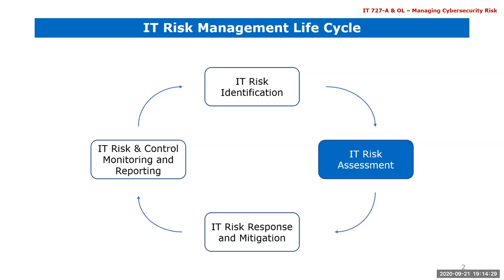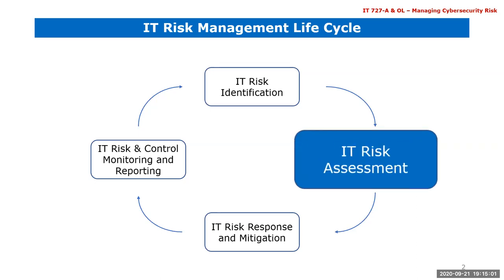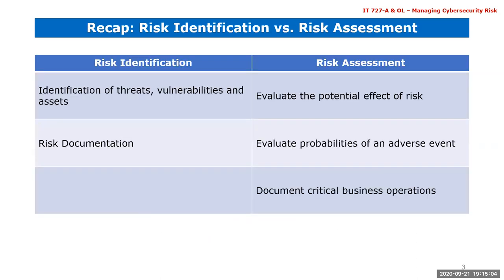The importance of documentation cannot be overstated — even if you don't want to document due to risk, document it for CYA. After identification, the next step is risk assessment — evaluating the risk and probabilities of it happening. The risk assessment complements categorization by looking at whether the risk is considered a big deal or not. There is overlap between risk identification and risk assessment; just embrace the process as it is not strictly linear.